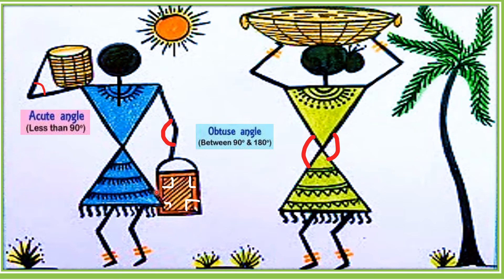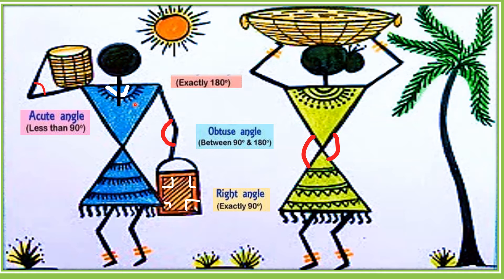If you observe here in the back, at the corners, it's exactly 90 degrees — so it's a right angle. Now here near the neck, you can observe a straight angle, exactly 180 degrees.